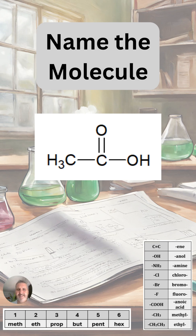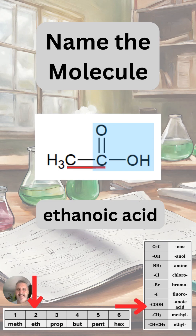We can see on the right-hand side here that we have a carboxylic acid functional group — this characteristic carbon double bond oxygen and carbon OH bond. So this is going to have the ending '-anoic acid'. We can see that there are two carbons in the longest chain, so the IUPAC name for acetic acid is ethanoic acid.